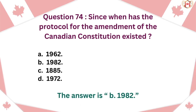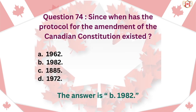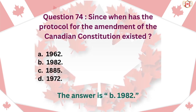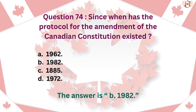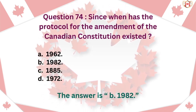Question 74: Since when has the protocol for the amendment of the Canadian Constitution existed? A. 1962, B. 1982, C. 1885, D. 1972. The answer is B. 1982.